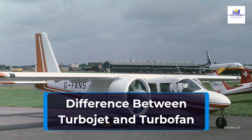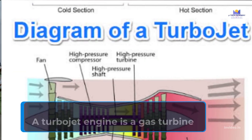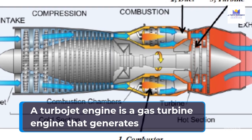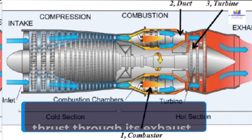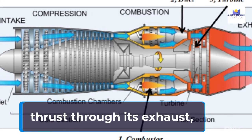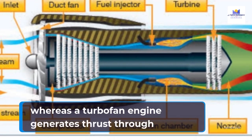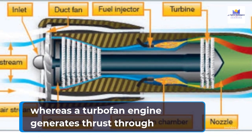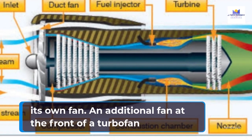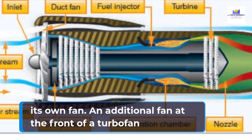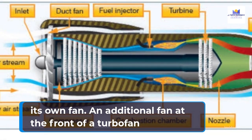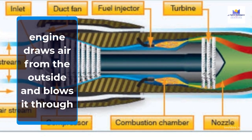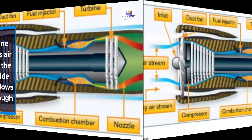The difference between a turbojet and a turbofan: a turbojet engine is a gas turbine engine that generates thrust through its exhaust, whereas a turbofan engine generates thrust through its own fan. An additional fan at the front of a turbofan engine draws air from the outside and blows it through the engine's core.